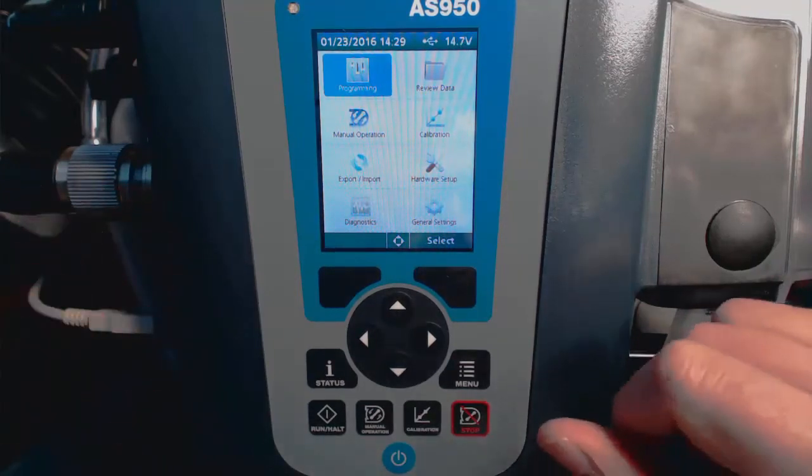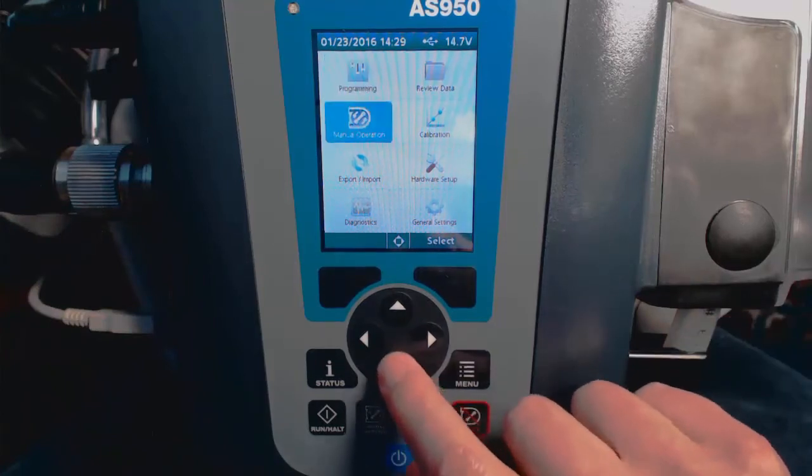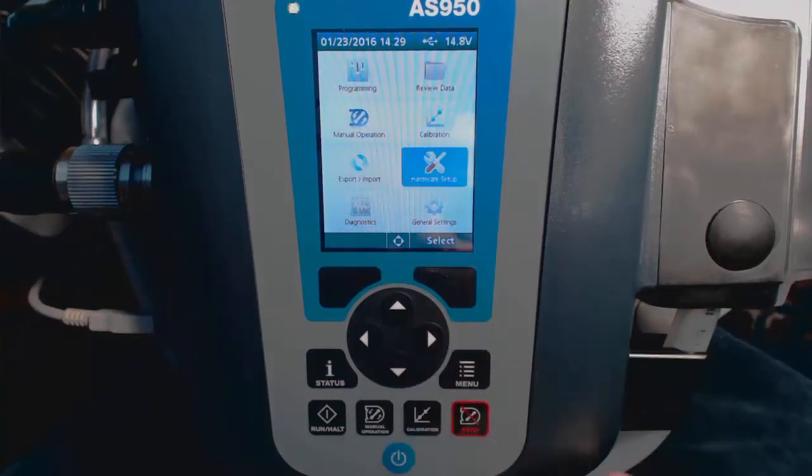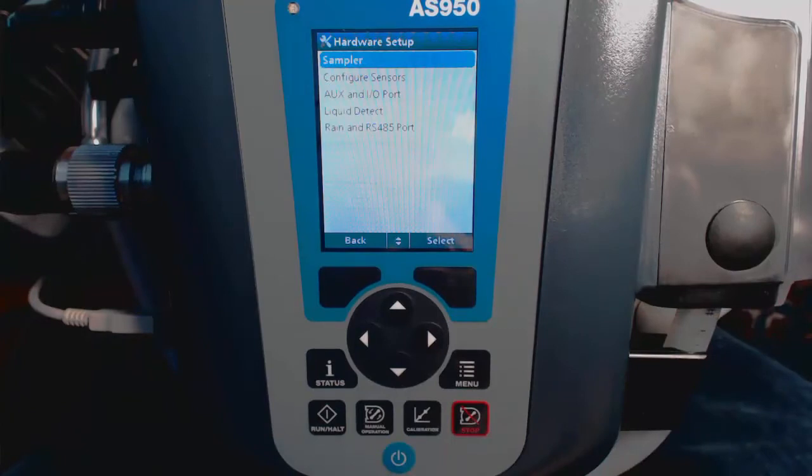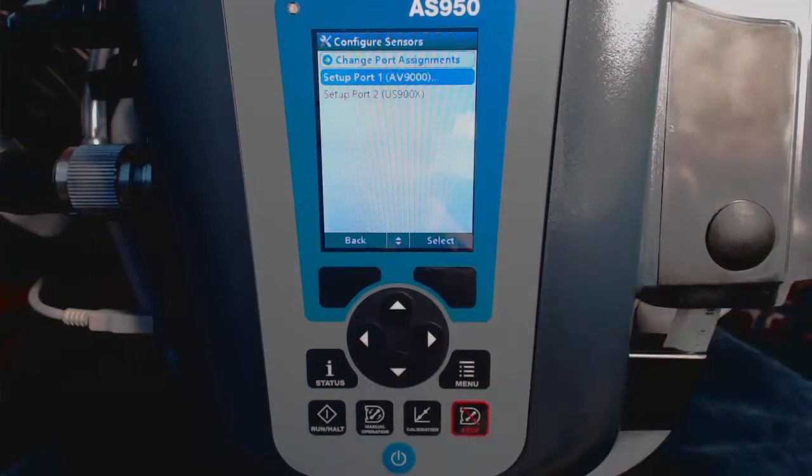The next step is to go into Hardware Setup and configure our sensor to calculate flow and calibrate the sensor. So we go to Hardware Setup, Configure Sensors, and select the AV9000.